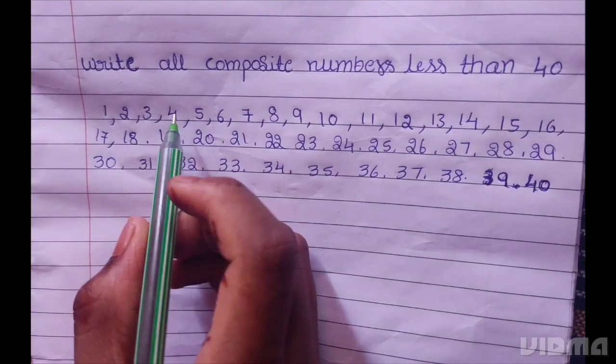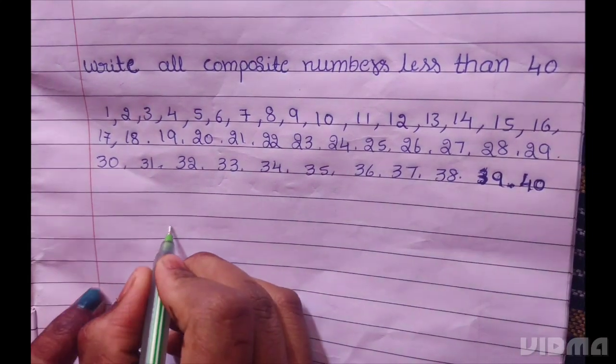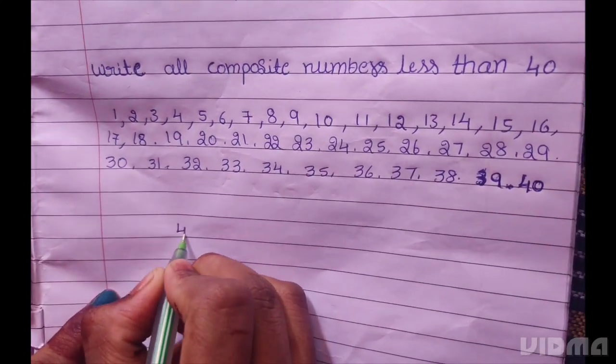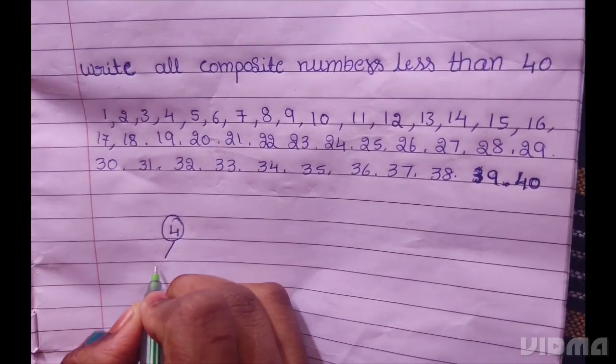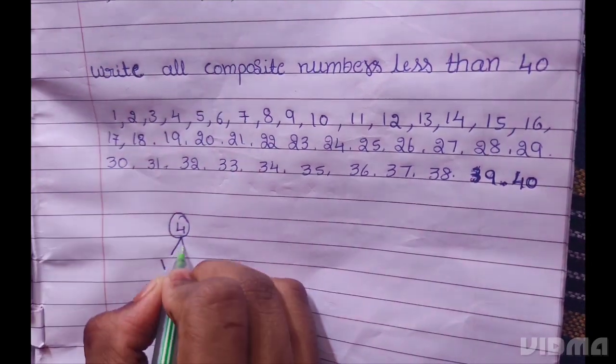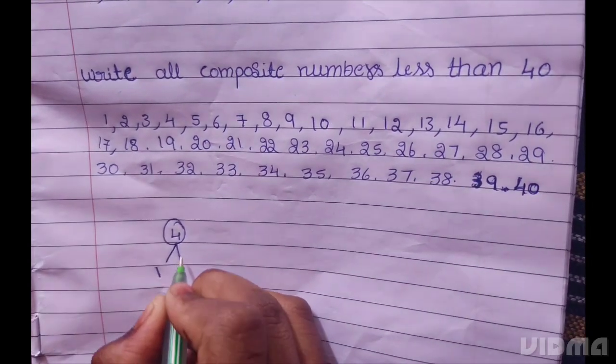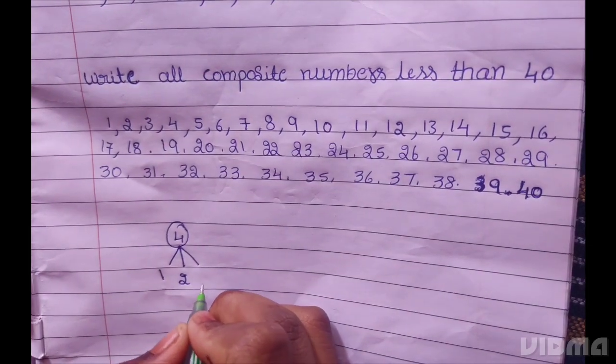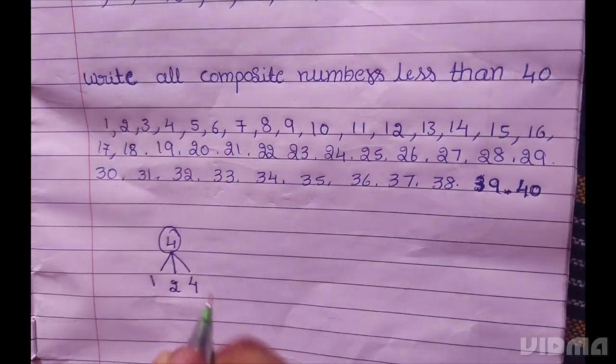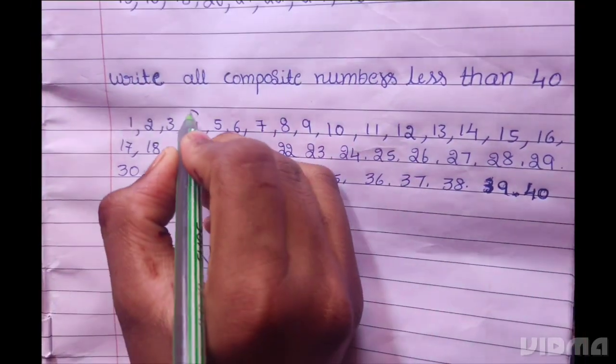4 is composite number because for example 4 will come in 1 table, 2 table and itself 4 table.